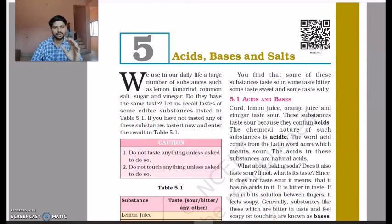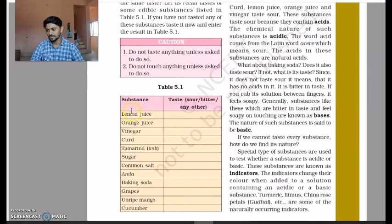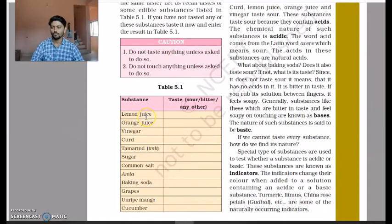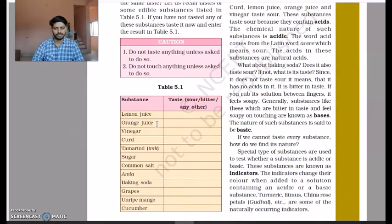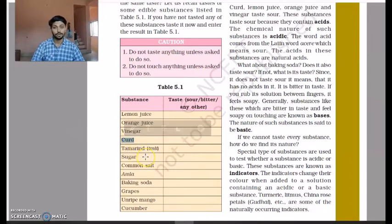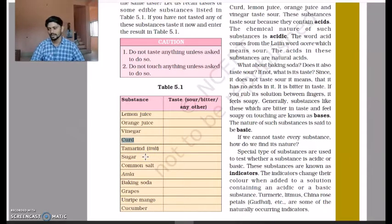Friends, you might have tasted various types of food. There are certain types of foods mentioned in this table. What is the taste of lemon juice? What is the taste of orange juice? You will see that the taste is a bit sour in nature. Orange juice, lemon juice — what about vinegar and curd? They also have a sourish nature in their taste.